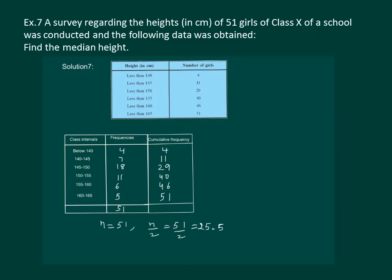We can see that in the cumulative frequency column, 25.5 will lie between 11 and 29. So the class interval corresponding to 29 will be the median class. Then we have lower limit of the median class as 145. Cumulative frequency of the class preceding the median class will be 11. F is the frequency of the median class, that is 18.